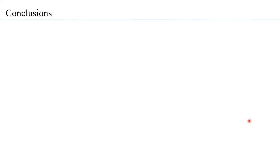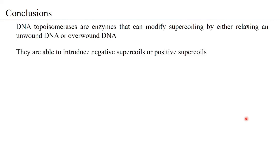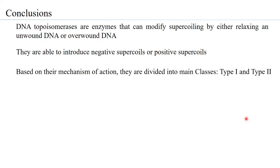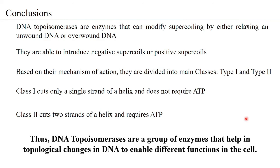In conclusion: DNA topoisomerases are enzymes that can modify supercoiling by relaxing either overwound or underwound DNA, and they can also introduce negative or positive supercoils. Based on their mechanism of action, they are divided into two main classes — Class 1, which cuts only a single strand of a helix and does not require ATP, and Class 2, which cuts two strands of a helix and requires ATP. Thus, DNA topoisomerases are a group of enzymes that help in topological changes in DNA to enable different functions in the cell. Thank you.